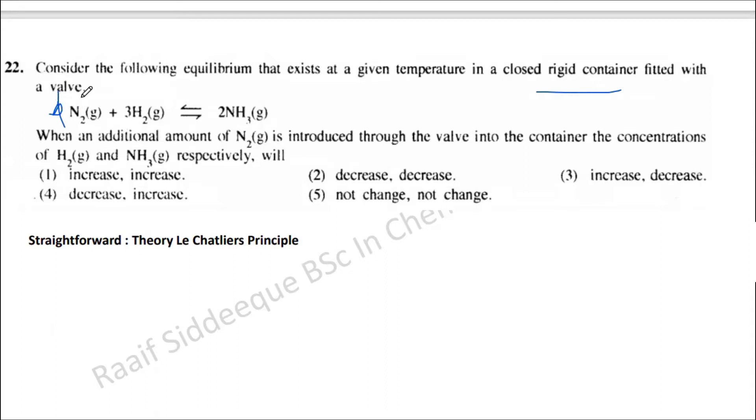According to Le Chatelier's principle, it does not like to allow this concentration increase. To maintain the equilibrium constant, the forward reaction will happen to reduce the increased nitrogen concentration, shifting the equilibrium towards the right-hand side to make a new equilibrium.